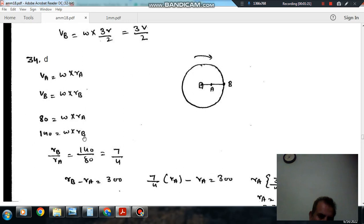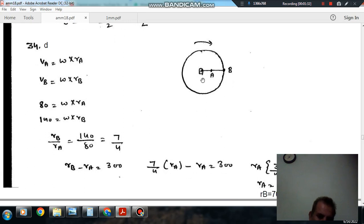and 140 equals omega times rB. So rB by rA is 140 by 80, or 7 by 4. Now, rB minus rA is the distance between two points.